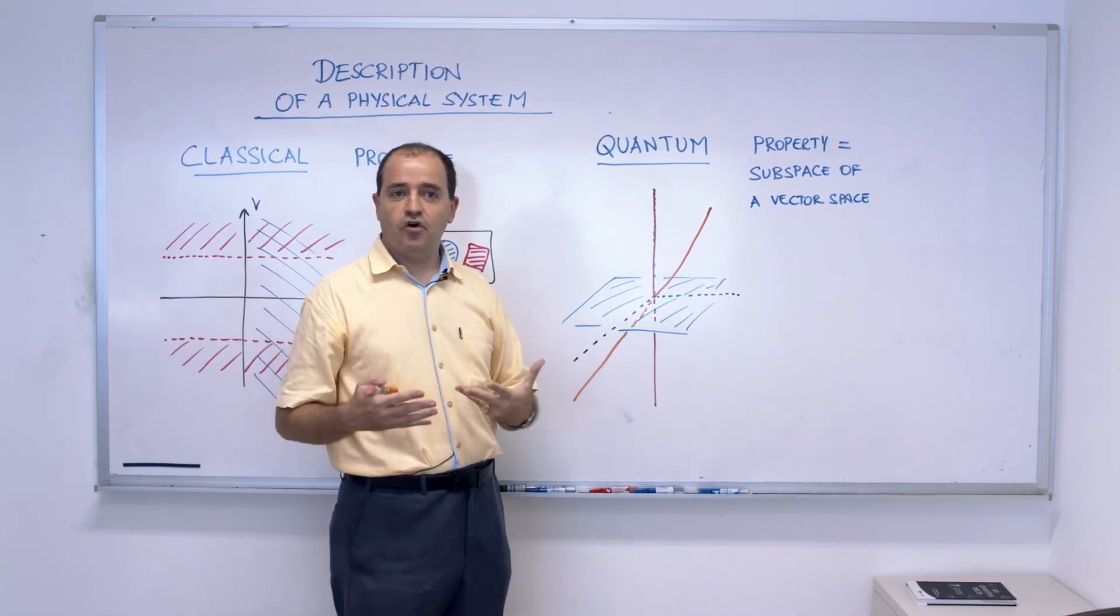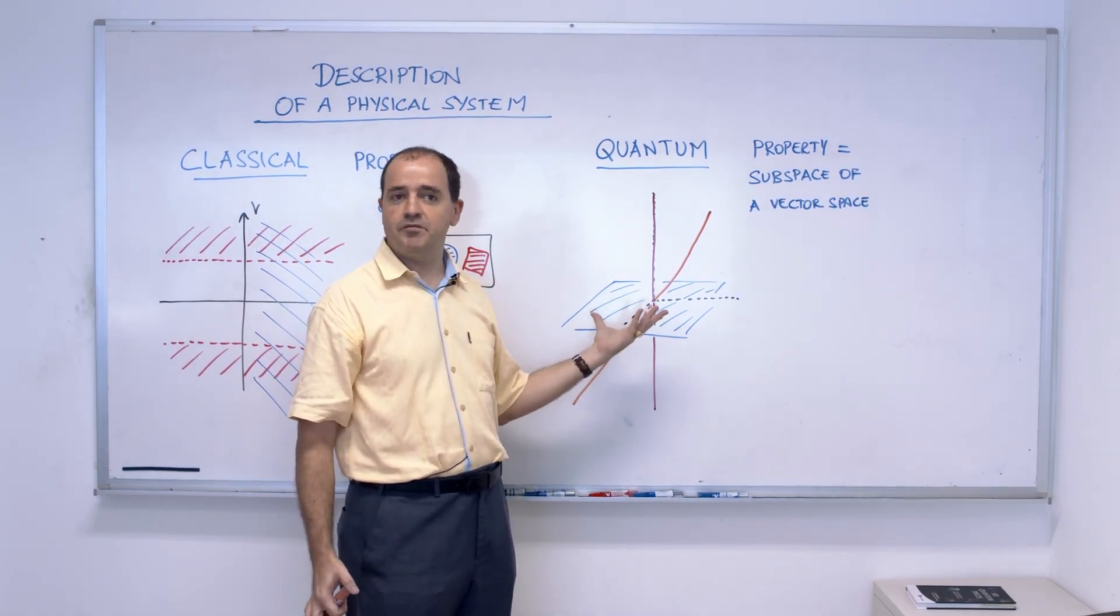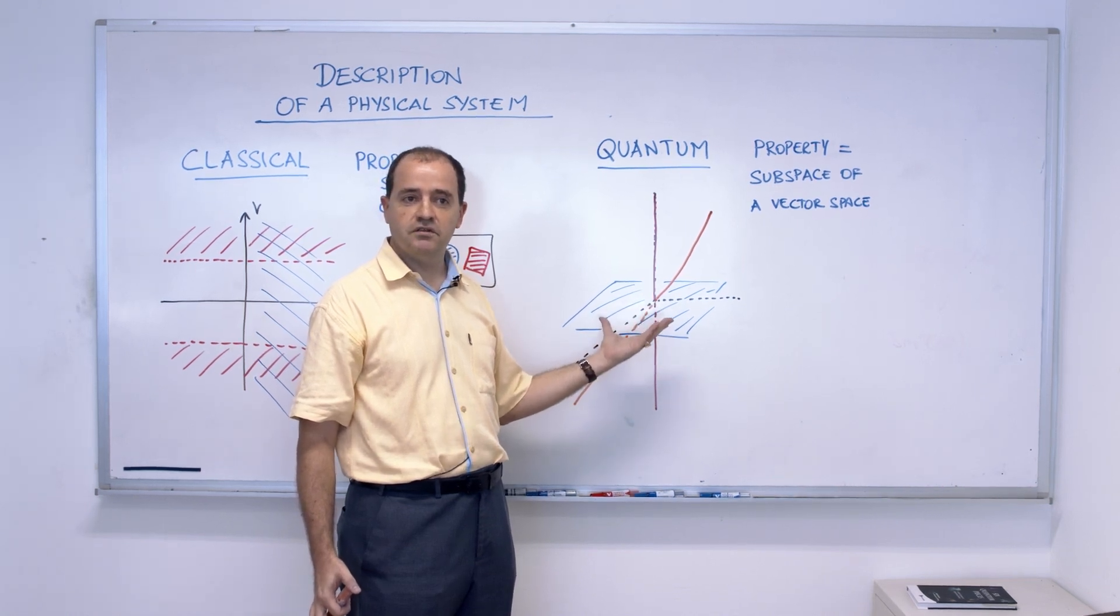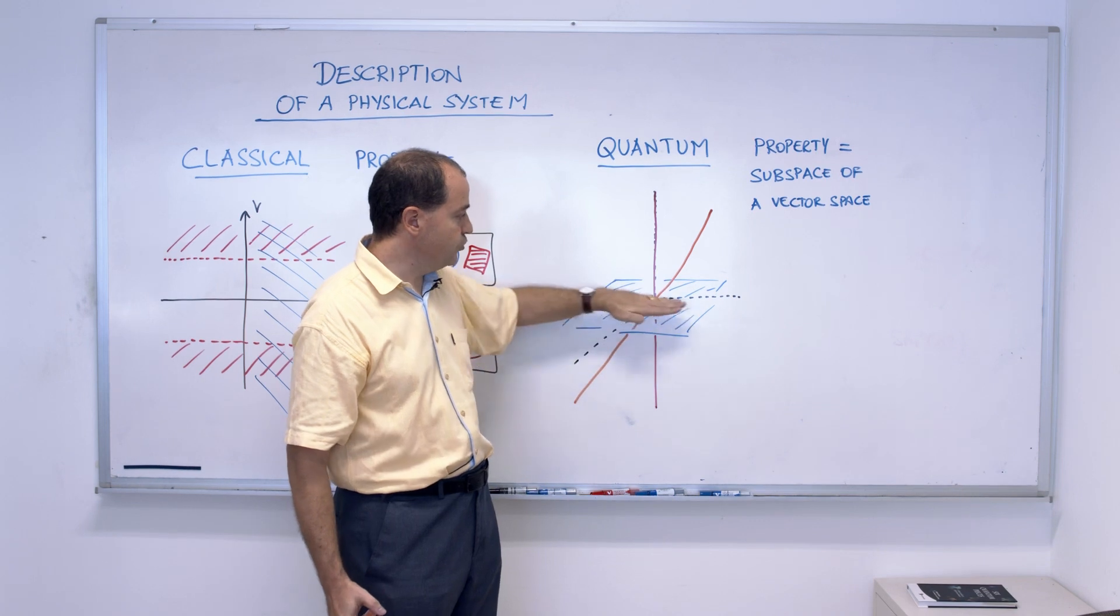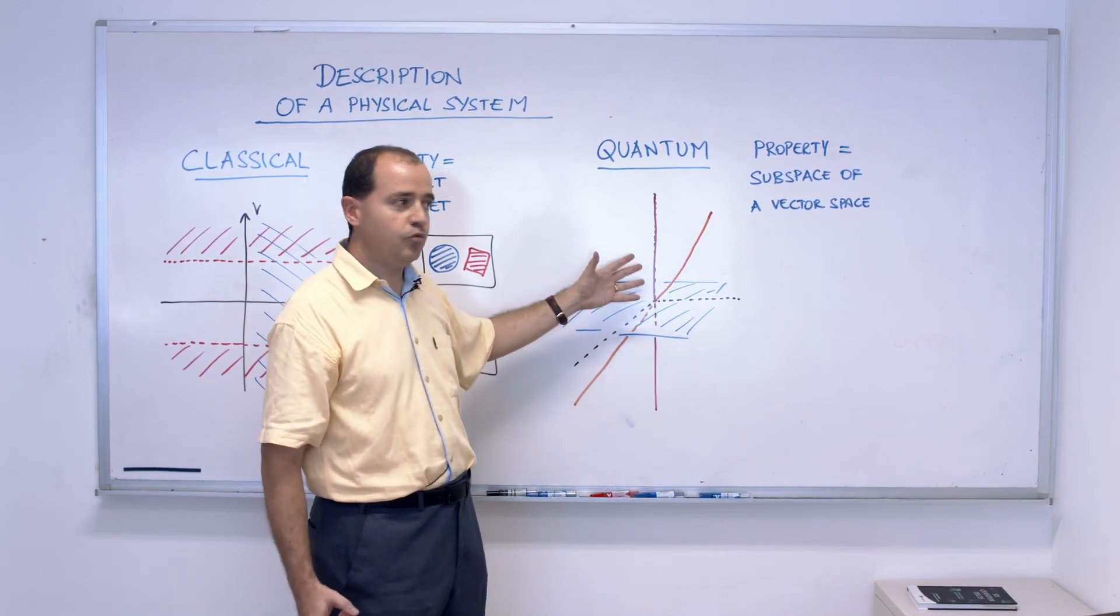You will see during this course a lot of these examples. This is, if you want, the mathematical way in which we describe the fact, for instance, that position and momentum cannot be measured simultaneously. These would be, for instance, values of position, and these will be values of momentum in a qualitative way.